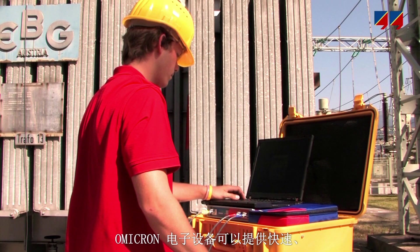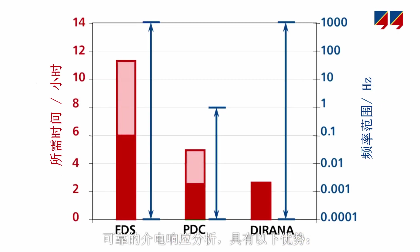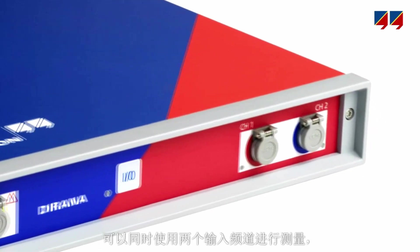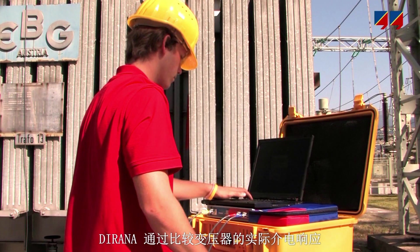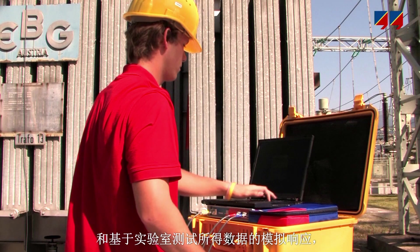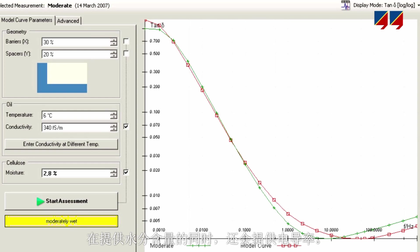With the Dirana, Omicron Electronics offers a reliable and fast dielectric response analysis comprising all these benefits and more. Compared to other dielectric methods, around 75% of the measurement time is saved by combining frequency domain spectroscopy at high frequencies with time domain measurement at low frequencies. Additional time can be saved by measuring simultaneously with both input channels and by using the forecast algorithm. The Dirana's moisture determination is based on a comparison of the transformer's actual dielectric response to modeled values based on data acquired in laboratory tests. An algorithm rearranges the model's response to match the actual results and delivers the values of moisture content along with the oil conductivity.